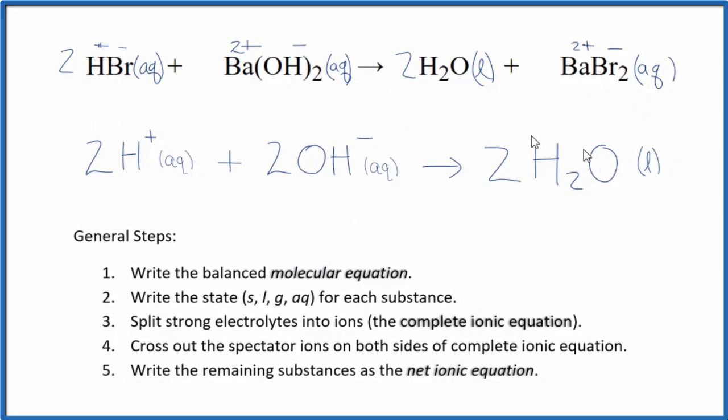And this is the net ionic equation for hydrobromic acid plus barium hydroxide. You'll notice we have the coefficients of 2, 2, and 2. We can reduce that further. We can just have 1, 1, 1, lower numbers there. We don't write the ones. So now this is a little more compact net ionic equation.